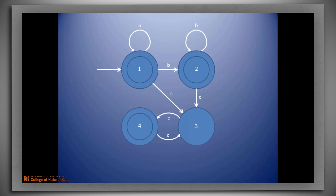The picture that we obtained in the previous video was this. Notice we have four states. The starting state 1 represents having gotten either no input or having gotten only A's. As soon as we see our first B, we move into state 2. And if we continue to see B's, we stay in state 2. As soon as we see our first C, either from state 1 or from state 2, we move into state 3.